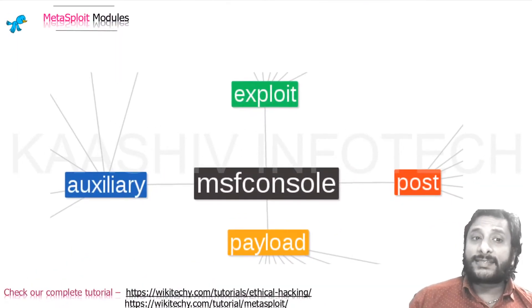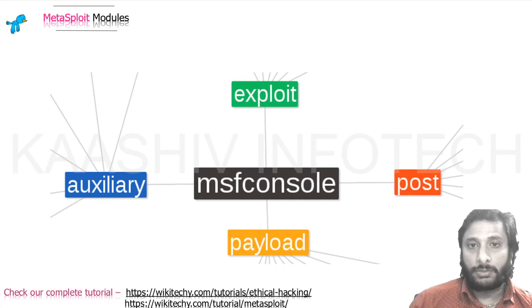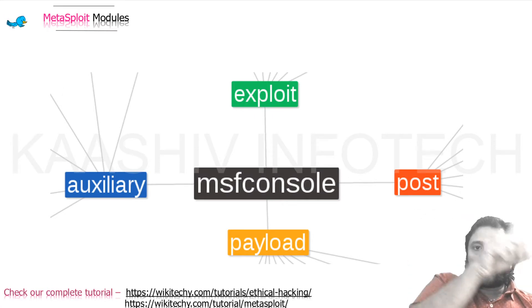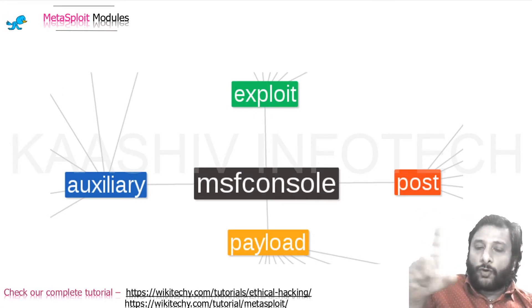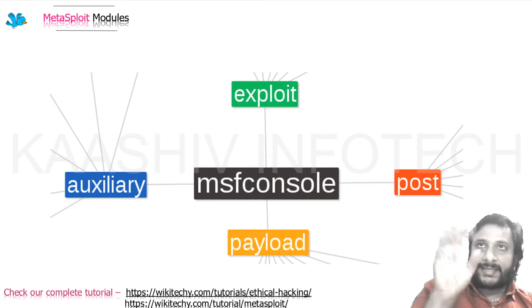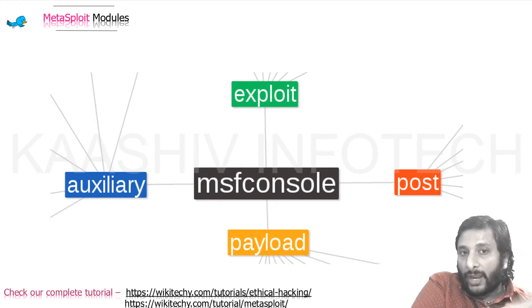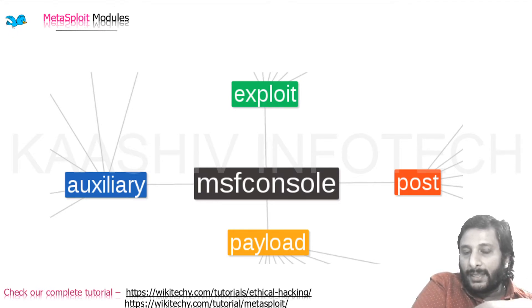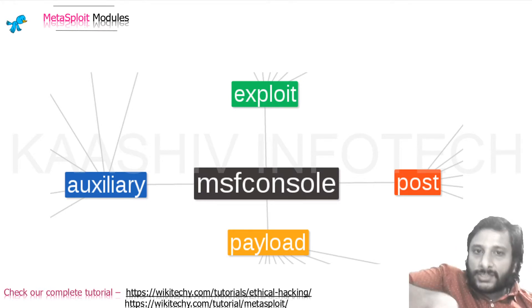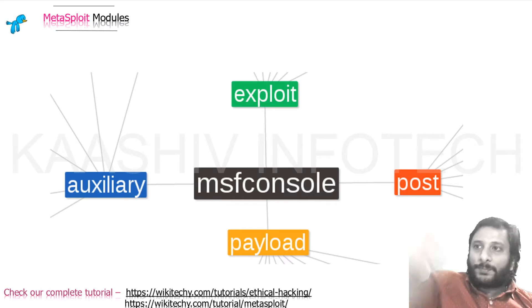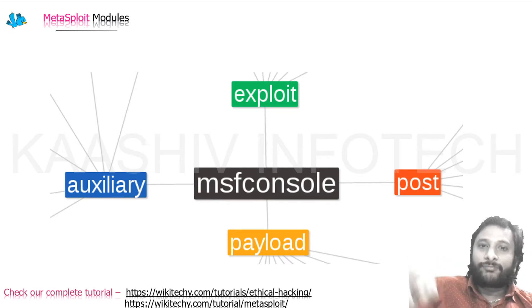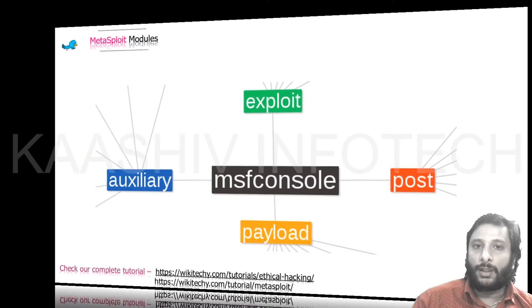Here are the Metasploit tools and modules available. There are four main modules: identifying the weakness, exploit, what kind of monitoring to do — auxiliary — and based on that, create the payload and post it. These are the main modules available, and there are also sub-modules available around the main modules.